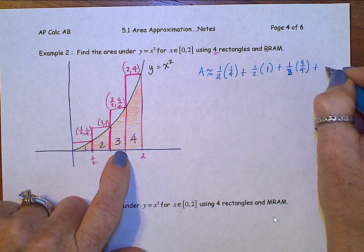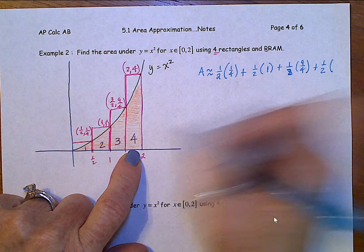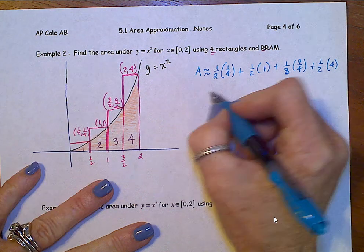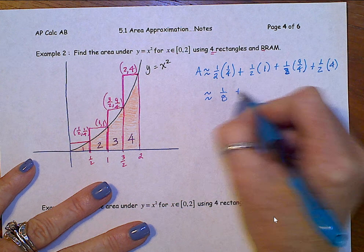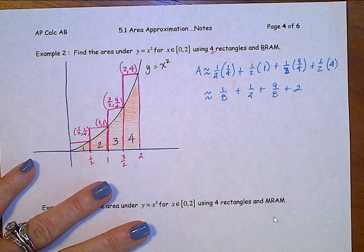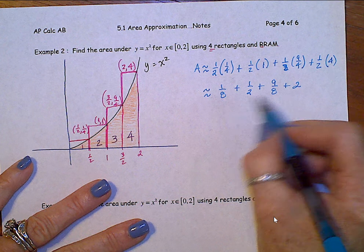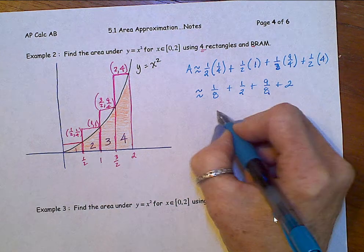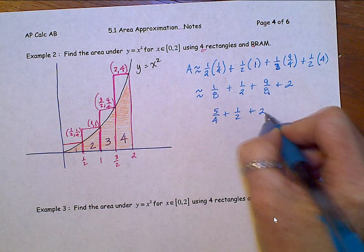And that last rectangle, 1 half wide, times the height, is 4. When we multiply all these pieces out, we'll have 1 eighth, plus 1 half, plus 9 eighths, plus a 2. Alright, 1 eighth and 9 eighths is 10 eighths, which is 5 fourths, plus 1 half, plus 2.